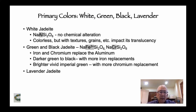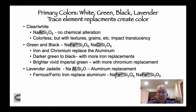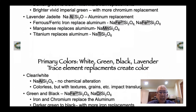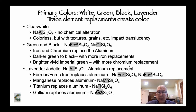Lavender jadeite is interesting in that there are three or four elements that replace the aluminum: ferric and ferrous iron, manganese, titanium, and gallium. I've been searching for research that explains the combinations and interactions of these elements that create the lavender color — it likely involves some physics as well as chemistry. But at least for now, know that when aluminum is replaced by these trace elements, you get lavender.